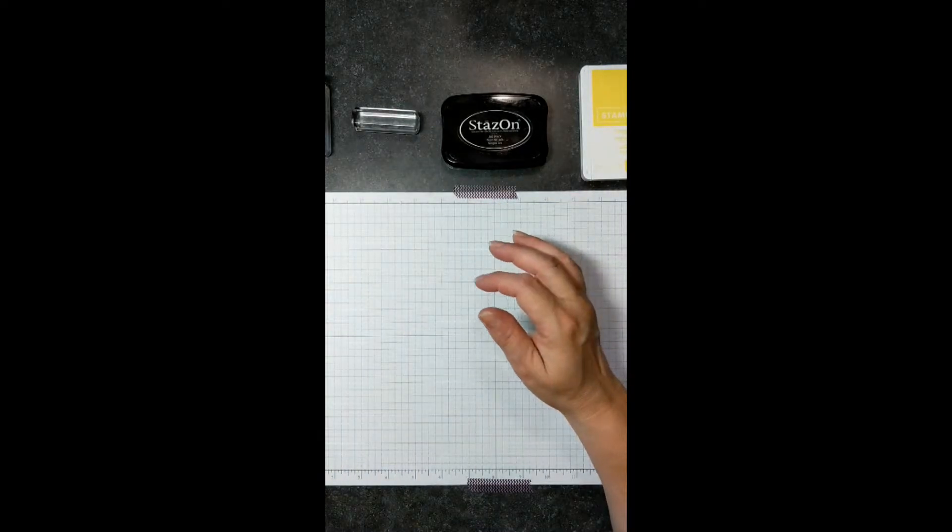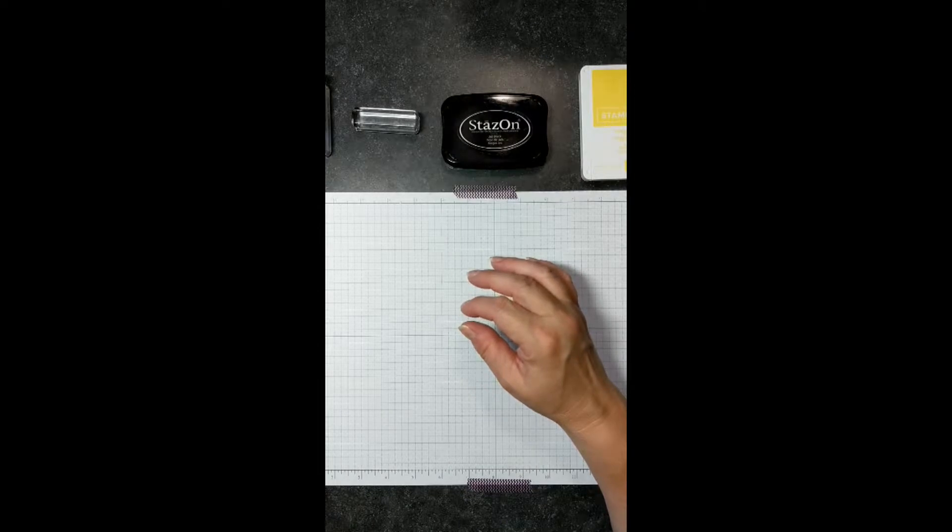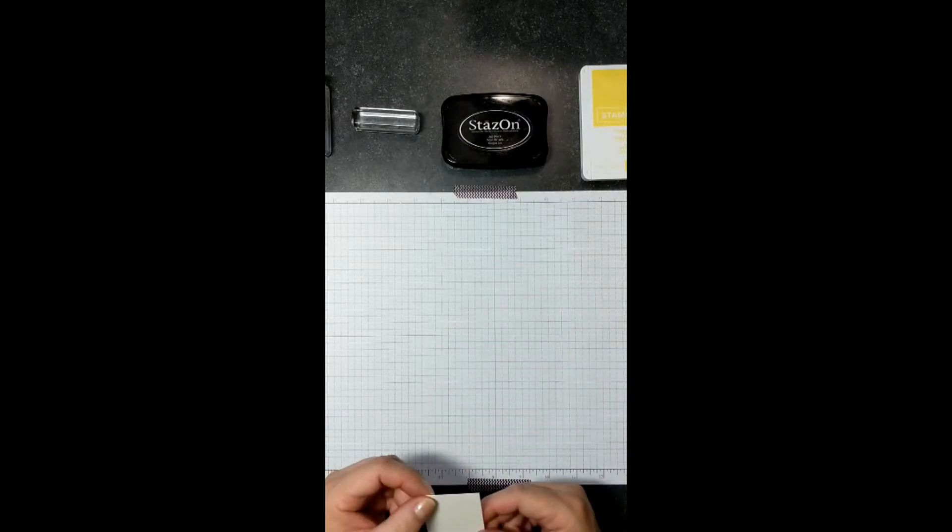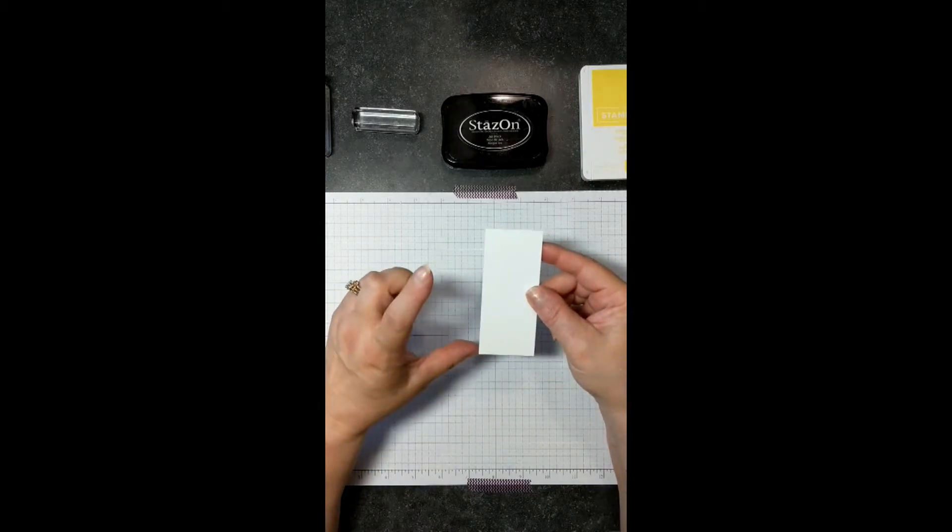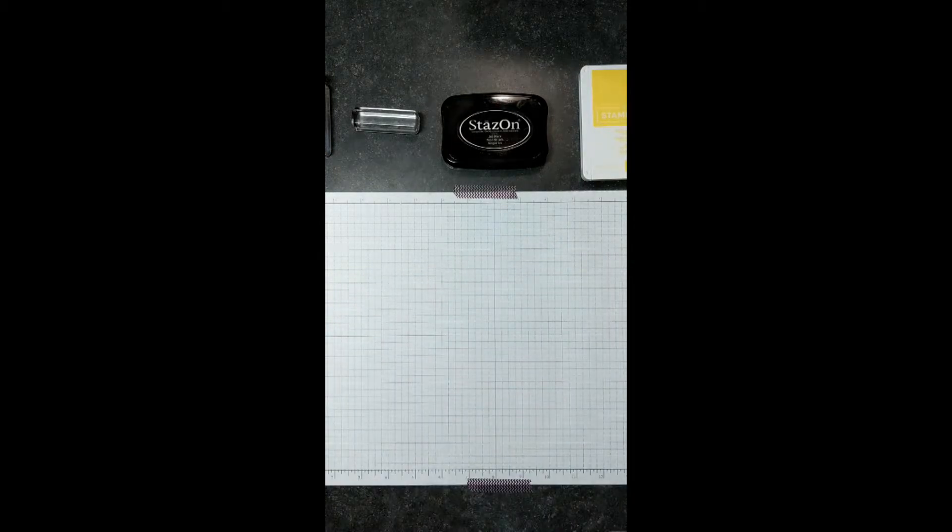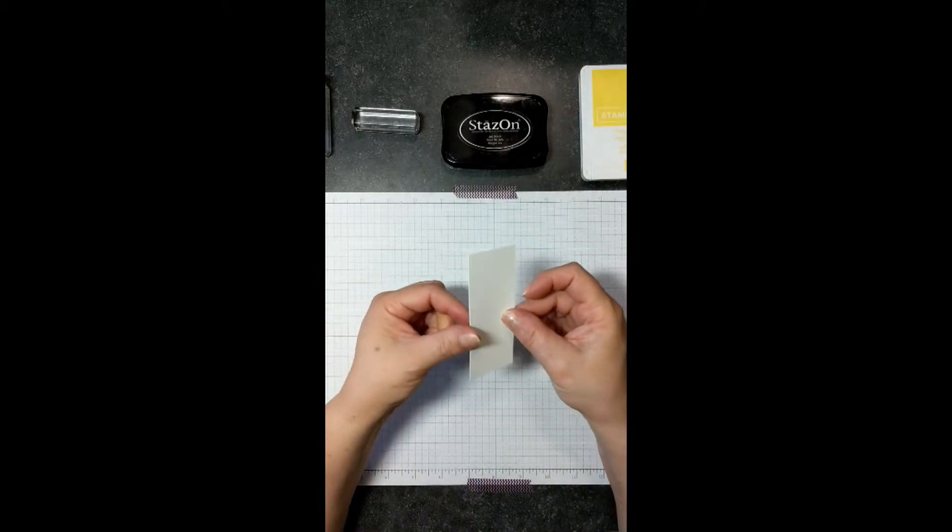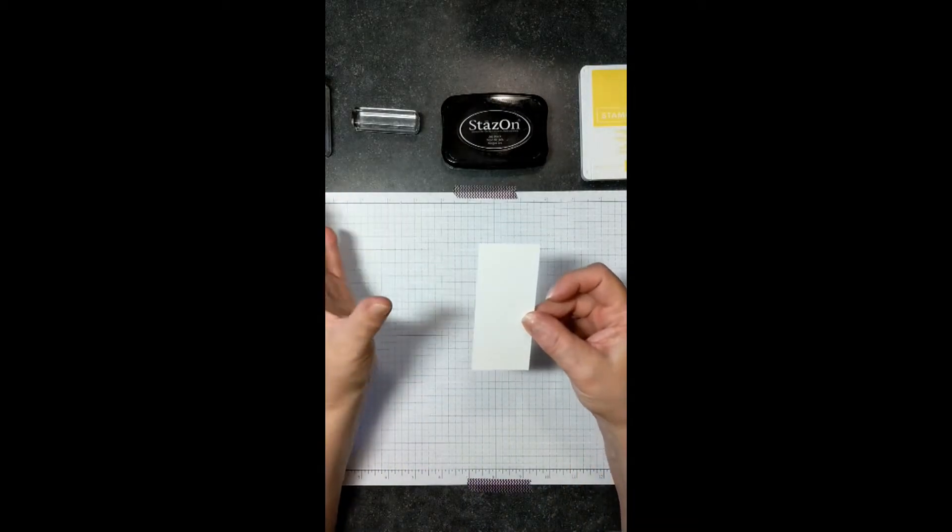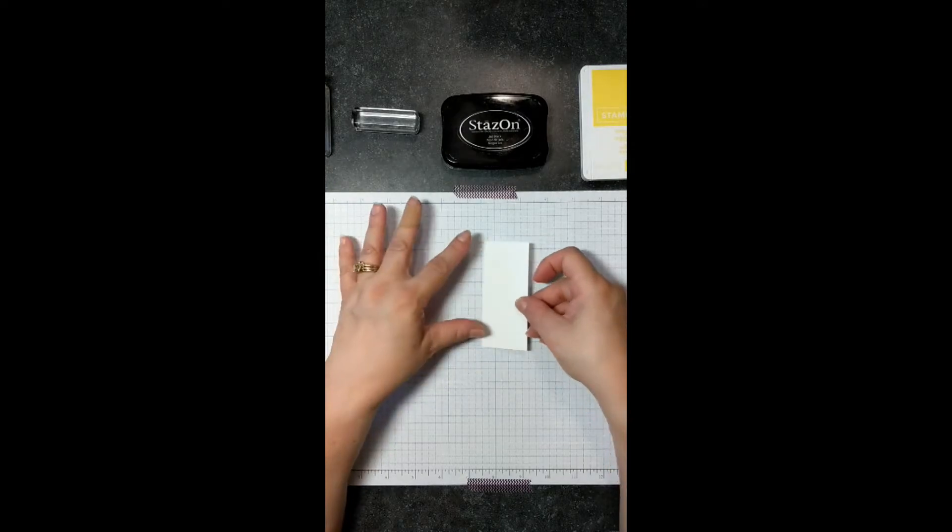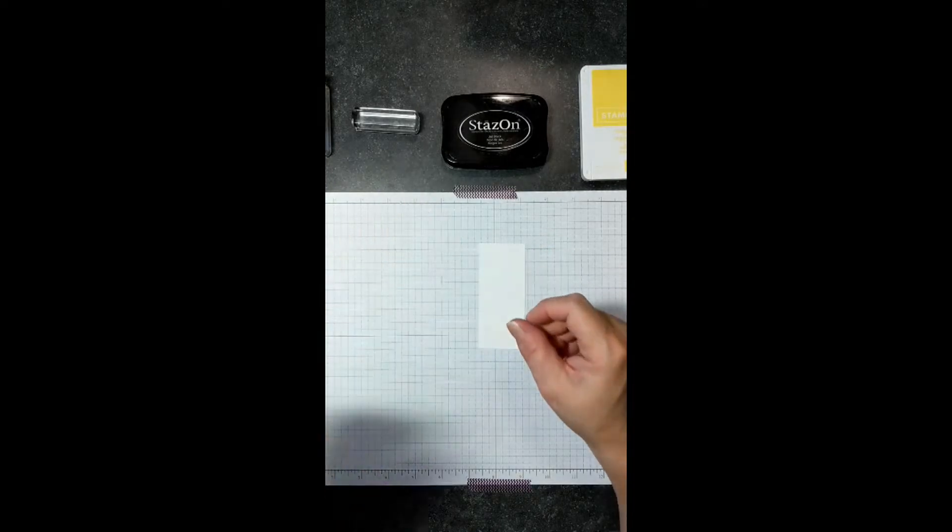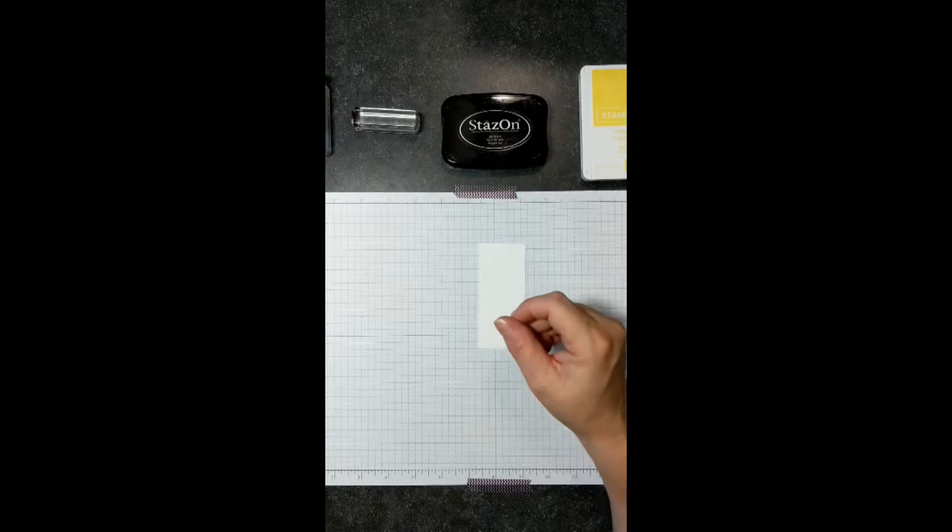I'm going to set those aside for now, and we're going to go ahead and get started. Our first thing that we're going to stamp is our image so that it has a few minutes to dry, and it is on a piece of 1 3/4 by 4-inch Whisper White. I use the Thick. It's just my favorite. I prefer it. So let's go ahead and get started here.